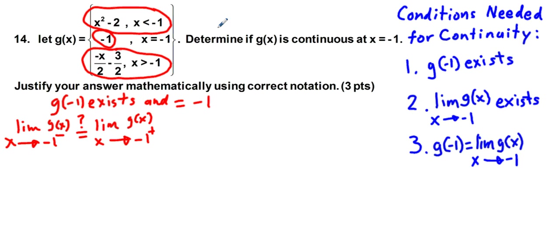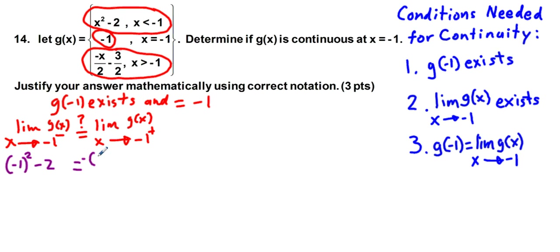Let's go through the process. We're going to take the left side: x squared minus 2, and in the place of x we're going to put negative 1. So this is negative 1 squared minus 2. On the right side, we have negative x, so I'm going to put negative negative 1 over 2 minus 3 halves.